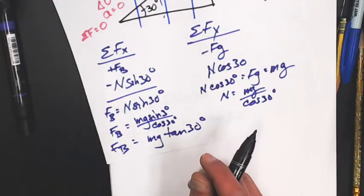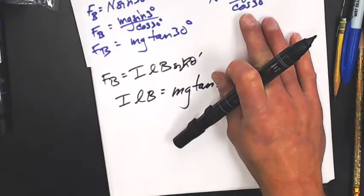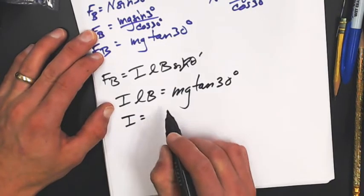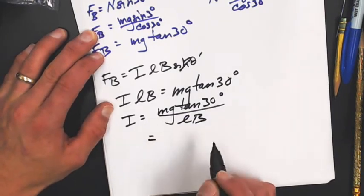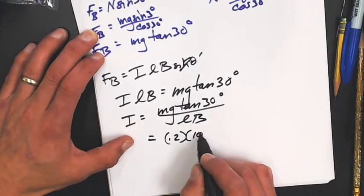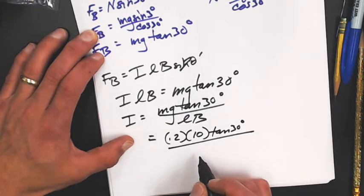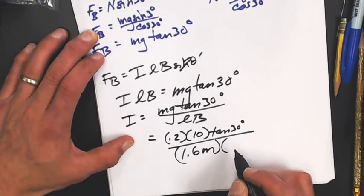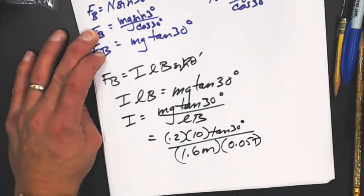Now back to my book. The current is what I'm looking for. Mg tan 30 over L B. I have the mass, which is 0.2 kilograms, G, which is 10, tan 30, which I already know. The length of the wire between them is 1.6 meters times the B field strength, which is 0.05 tesla. There you go. You can multiply it out for yourself.